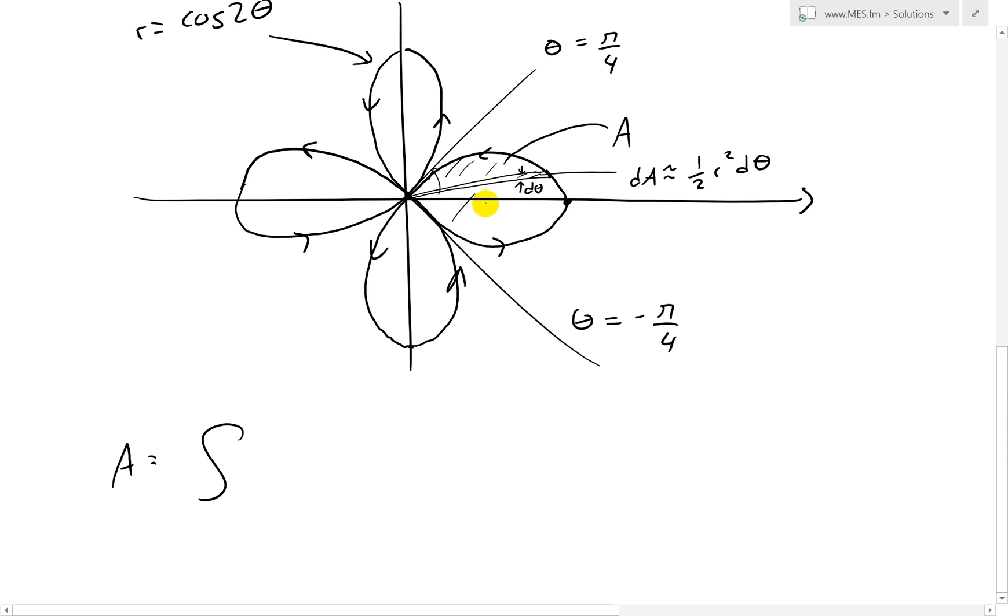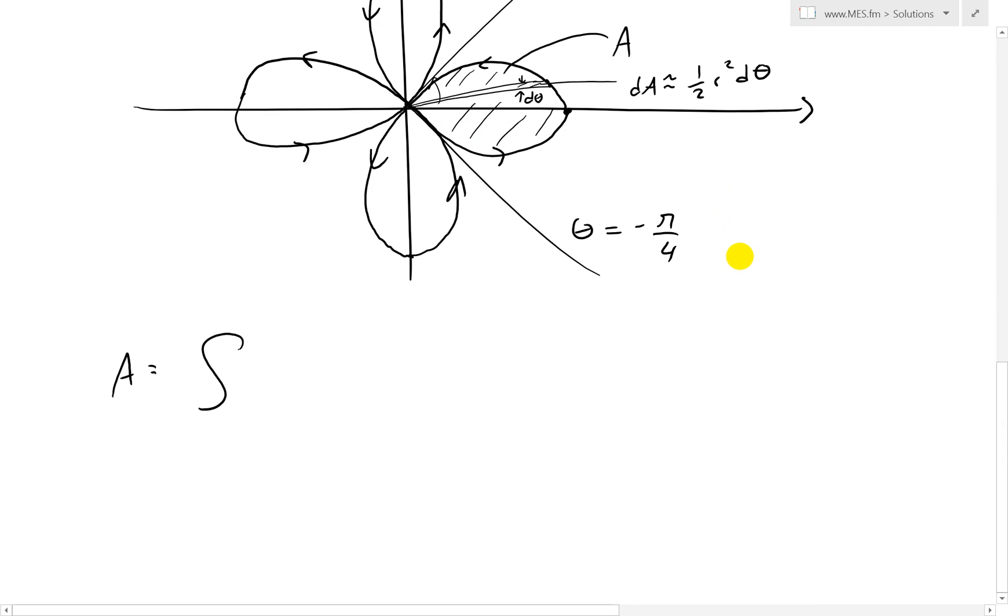So this area, now I'll shade this around all the way across, is going to be the integral from negative pi over 4, because we want this bottom shape, all the way to pi over 4, of one half r squared d theta. And then when we plug the r, that's going to be negative pi over 4 right here, pi over 4.